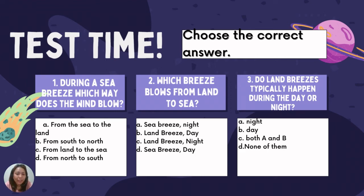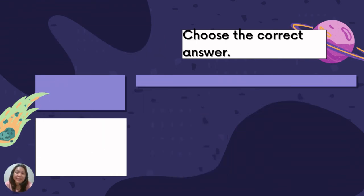Third question: Do land breezes typically happen during the day or night? A — night, B — day, C — both A and B, or D — none of them? The answer is letter A — during nighttime.